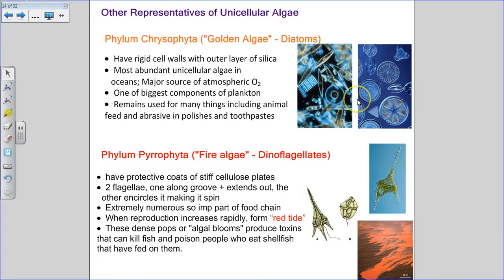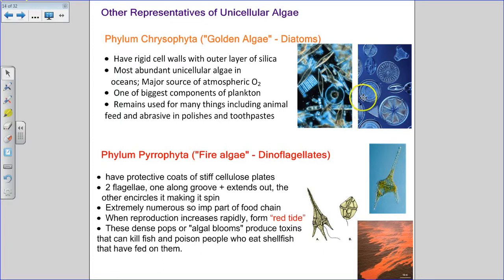Diatoms are one of the biggest components of plankton. They're also important for industrial use — people harvest them for animal feed, and because they're so tiny and hard, they work very well in polishes and toothpastes as an abrasive to help clean things.